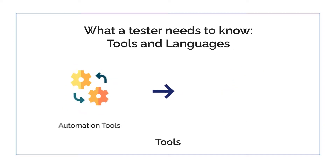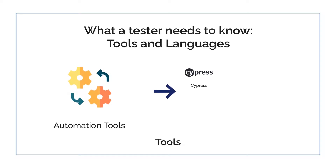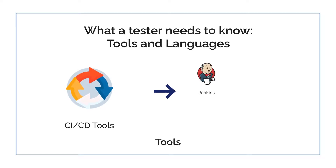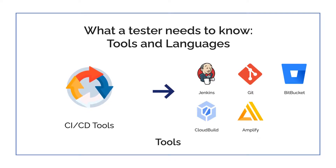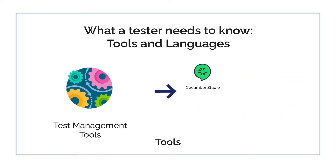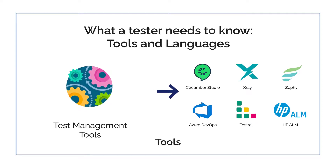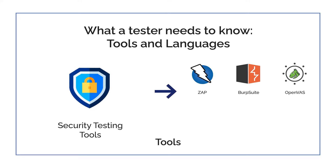Automation tools: Cypress, Ranorex, Karate APM, Selenium, Cucumber. CI/CD tools: Jenkins, Git, Bitbucket, Cloud Build, Amplify, Azure Pipeline. Test management tools: Cucumber Studio, X-Ray, Zephyr, Azure DevOps, TestRail, HPLM.